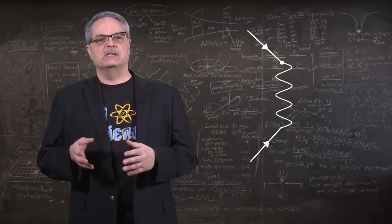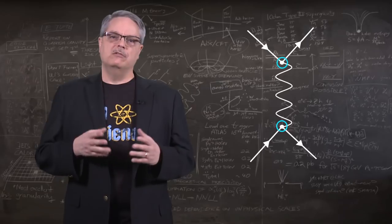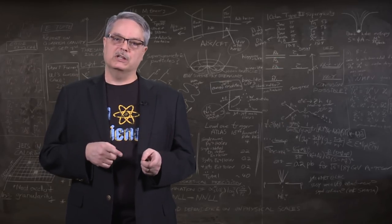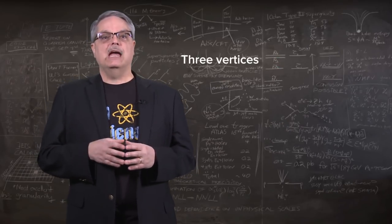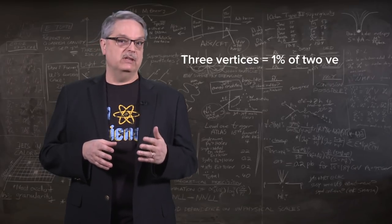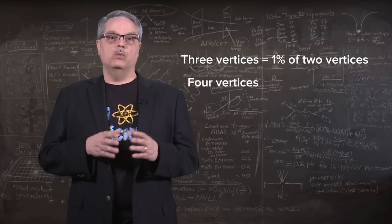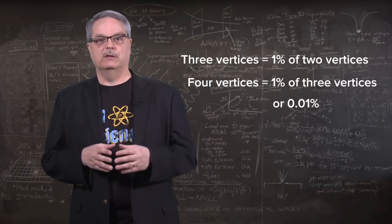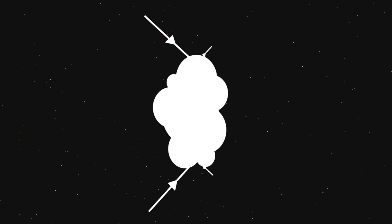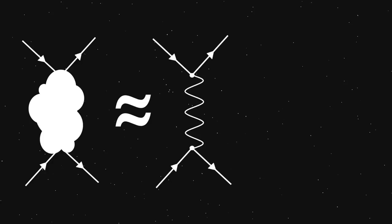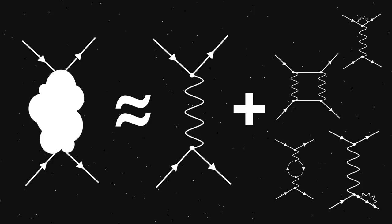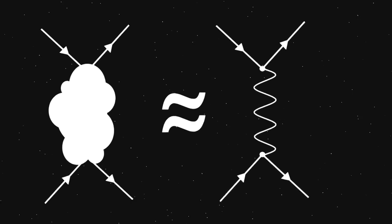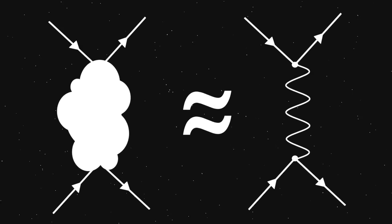In practical terms, that means we can simply count vertices and get a sense of how much each diagram contributes. The simplest electron scattering Feynman diagram has two vertices. There are no pictures with three vertices that have two electrons in and two out, but if there were, they would happen about 1% as often as the two-vertex case. Four vertices would be 1% of 1%, or 0.01%, etc. Thus, we can see that the first and simplest picture really dominates. All the other and more complicated Feynman diagrams are just far less likely, and that means that doing a QED calculation is relatively easy. You don't have to include all possible Feynman diagrams. The simplest one does most of the job.